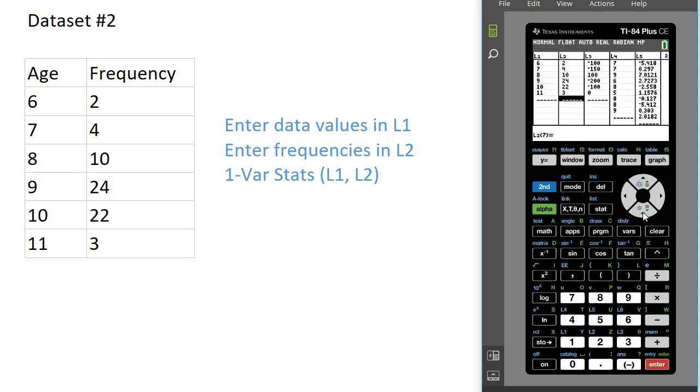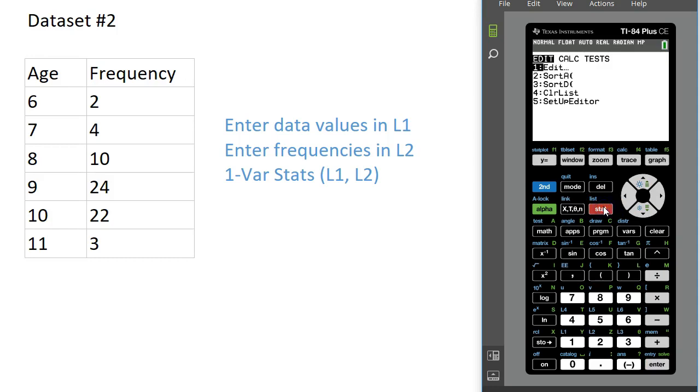We're going to use both lists. We're going to put the ages in the first list, and the frequencies in the second list. Then we're going to press Stat and go over to Calc again, and use the same function, one variable stats.